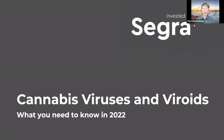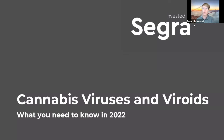If you're not familiar with SEGRA, we're an agriculture technology company based up in Vancouver, Canada, specializing in cannabis plant tissue culture, genetic banking, young plant production, genomics, molecular biology, and plant pathogen detection. Our primary focus is on the development, distribution, and preservation of clean stock cannabis cultivars for licensed producers globally.